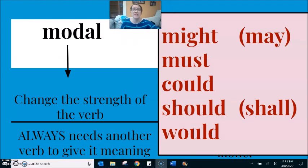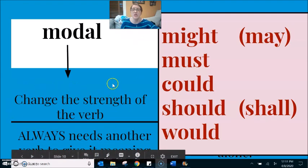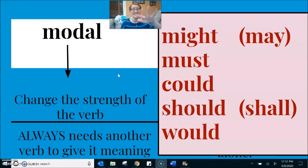So again, these five. Coming back to what I said earlier. How these are changing the strength of the verb. Might. 50-50. Unsure. Must. 100% definite. She must call you back. Could. She could call you back. She is able. She should call you back. It's a good idea. She would call you back. She wants to call you back. But maybe she can't.